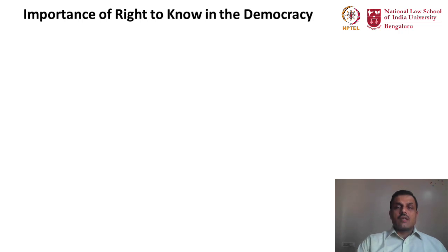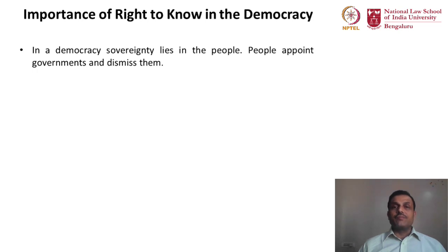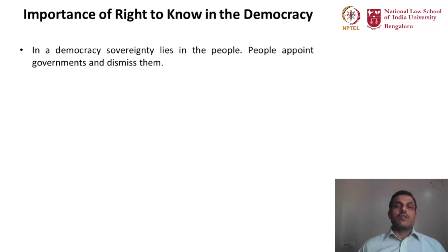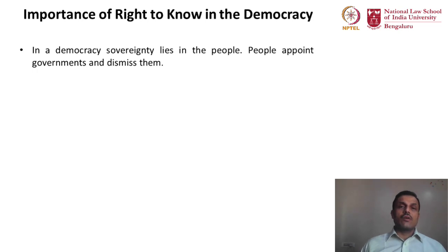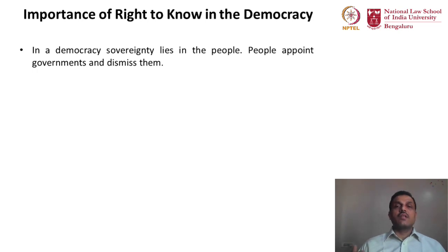Right to know is nothing but another way of looking at right to information. It is a need of human beings to know and understand so that they can appreciate what is being done. In every democratic institution, government is made by the people. The real power of any democracy is within its people. If you look at the preamble of the Indian Constitution, it starts with the words 'We the people,' meaning we the people have given this constitution to ourselves.